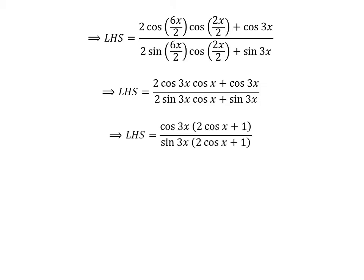Taking out the common factor cosine of 3x in the numerator and sine of 3x in the denominator gives us the left hand side equal to cosine of 3x times (2 times cosine of x plus 1), upon sine of 3x times (2 times cosine of x plus 1).